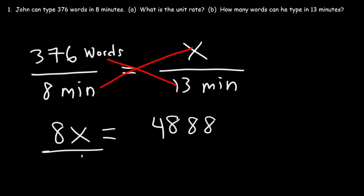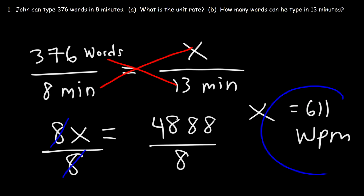Next, we need to divide both sides by 8. On the left side, the 8s will cancel. On the right side, we just divide those two numbers. 4,888 divided by 8 is 611. So we get the same answer.